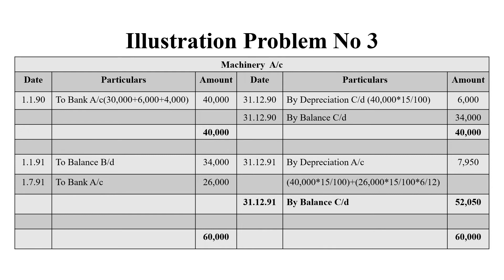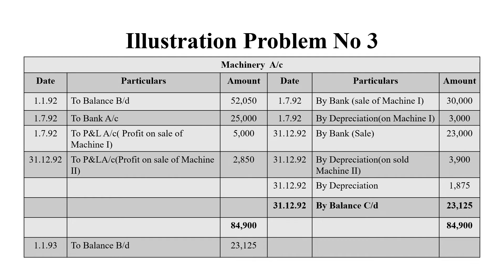The balancing figure on the credit side is Rs. 52,050 and grand total on both sides is 60,000 rupees. In the third year, the previous year balance brought down to the debit side is 52,050 rupees. A third machinery was purchased on 1st July 1992 for Rs. 25,000. On 1st July 1992, we recorded a profit of Rs. 5,000 from selling one machine, and on 31st December a profit of Rs. 2,850 from selling another machine.